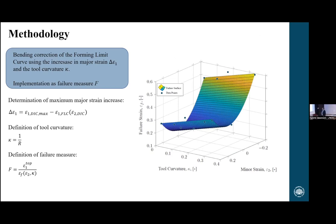In order to implement this into commercial finite element software, I introduced the concept of a failure measure, where this failure surface as a function of minor strain and tool curvature is compared to the major strain at the top layer of the simulation. This is important — we are working with the top layer in every element so we can see how close the element is to failure.